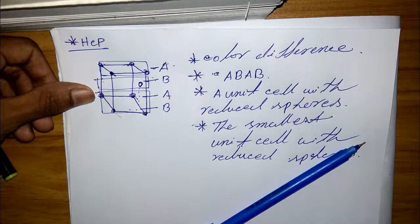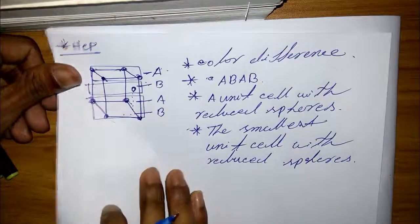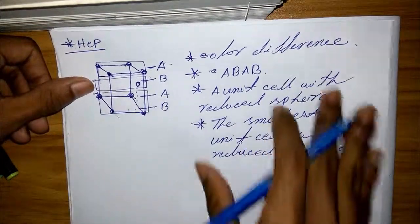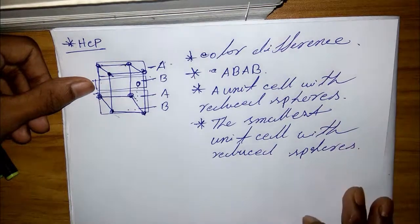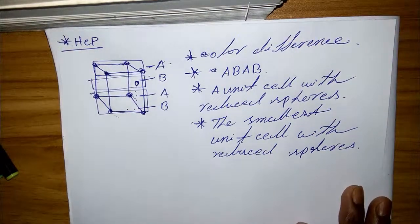Those are the characteristics of the FCC, HCP, and BCC unit cells. Thank you everyone, see you next time.